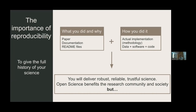The importance of reproducibility is to give the full story of the science you are doing. What you did and why usually goes into the paper. The documentation and README files explain that. But then there is how you did it — the actual methodology, the code, the scripts, the data. You also need to tell that story. If you deliver the full story, you deliver robust, reliable, trustworthy, open science.